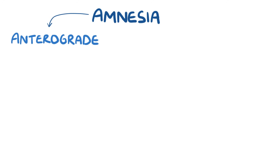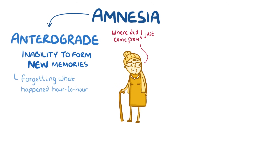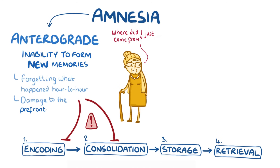With amnesia, any of these four stages can be affected. Amnesia can be categorised into two types, according to which of the stages is impacted. The first type is anterograde amnesia, and it refers to an inability to form new memories, often forgetting what happens hour to hour. This can feel incredibly confusing and frustrating for individuals as they struggle to recall recent events, like who they just spoke to or where they just came from. Anterograde amnesia is usually because of a problem in the encoding or consolidating stage, and typically results from damage to the prefrontal cortex or hippocampus.